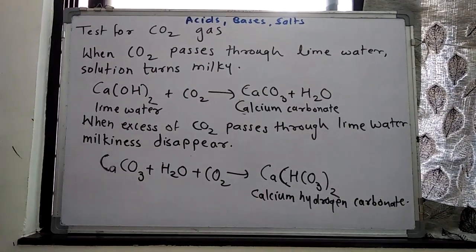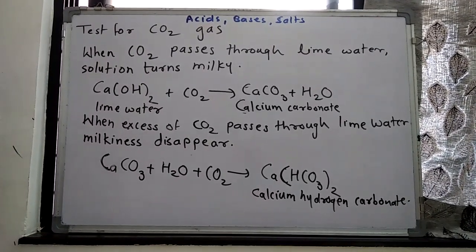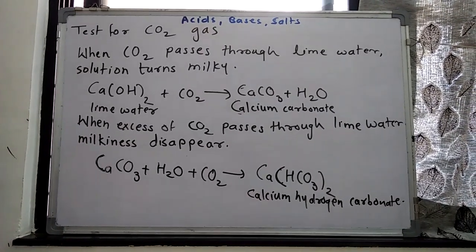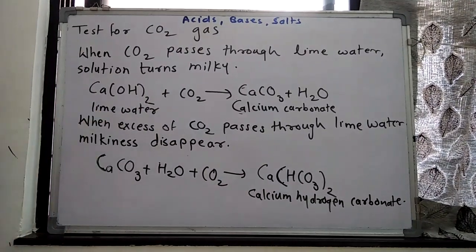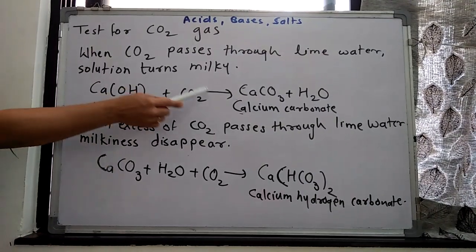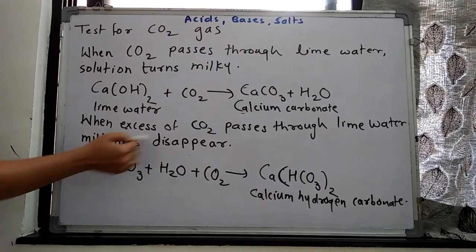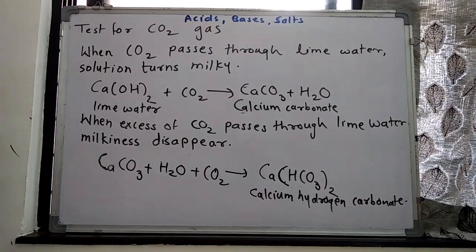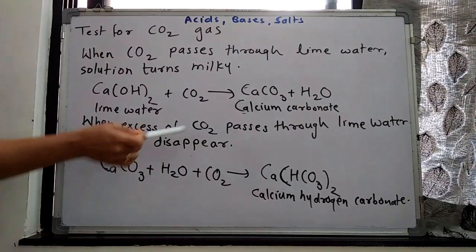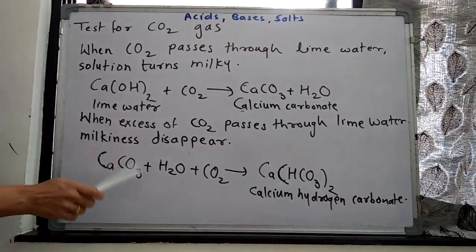When we first pass some amount of CO2, the solution becomes milky. But if we pass more CO2, the milky or whitish color disappears. So when excess CO2 passes through lime water, the product CaCO3 reacts further with excess CO2 and H2O to give Ca(HCO3)2 — calcium hydrogen carbonate — which does not have a milky color.